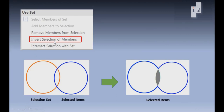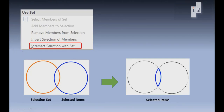The Invert Selection of Members: we have a selection set and selected items, possibly overlapping. The result is it will add to the selected items all items which are in the selection set except those in both groups. And finally, Intersect Selection with Set will just keep selected the items which were part of both groups — the selection set and the selected items. I hope this presentation of the selection set functions gives you a better understanding of how this function works. Thank you.